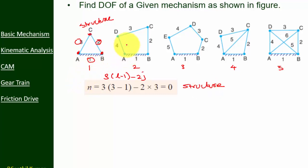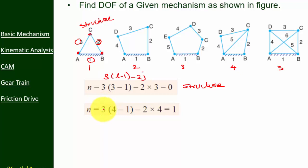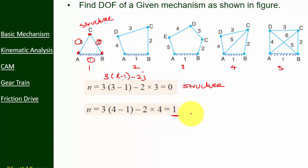Arrangement 2 is the four-bar mechanism, which we already calculated. Using 3(l − 1) − 2j: l = 4, j = 4, so n = 3(3) − 2(4) = 9 − 8 = 1. Degree of freedom equals one — this is a simple mechanism.